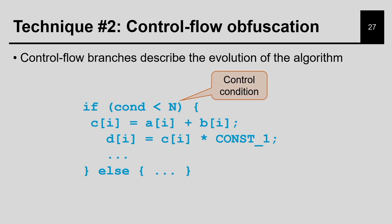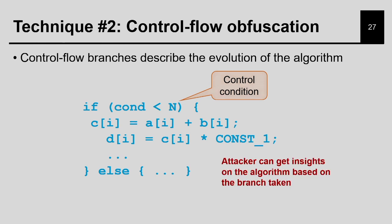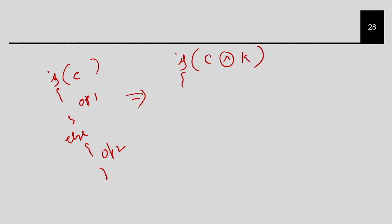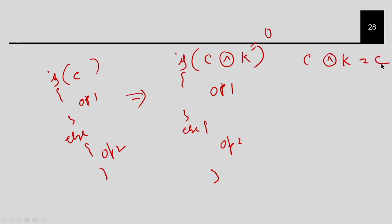The next one is control flow obfuscation. The idea is to make sure that the control decision cannot be known without the value of the key. Suppose you have a condition C, and then you do operation 1 in the if branch, else operation 2. What I am going to do is replace C with C XOR some key. If my key is equal to 0, then C XOR 0 equals C, so the structure stays the same.